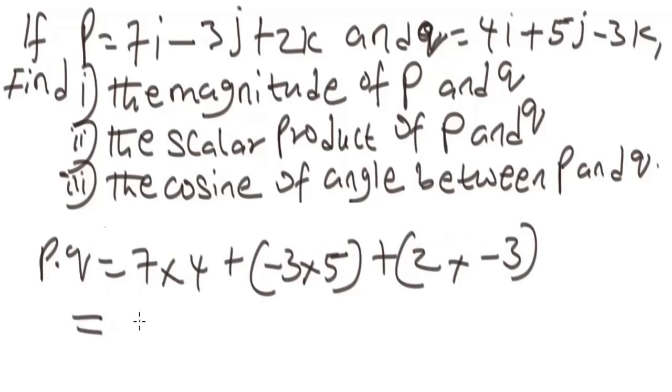When we simplify, we are going to have 7 times 4, we have 28, minus 3 times 5 will give us minus 15. Then, 2 times negative 3 will give us minus 6. So when we simplify further, we are going to get 7 as the answer. This will give the scalar dot product of these vectors P and Q.